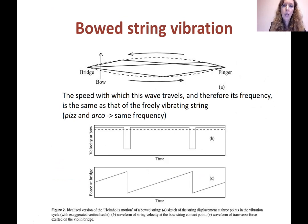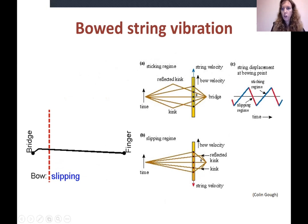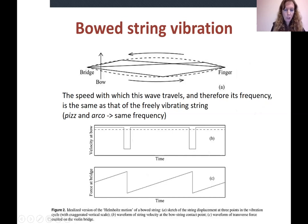Looking at velocity at the bow: the string travels with the bow velocity, then suddenly slips — it goes negative because it's going the other way — then goes back to the velocity of the bow. Slips, goes the other way again, then returns with the bow velocity when sticking. So we have the sticking phase here and the slipping phase here.